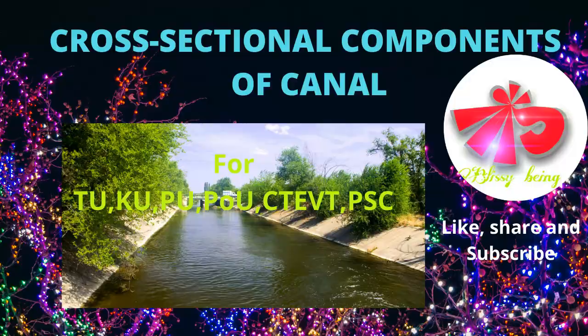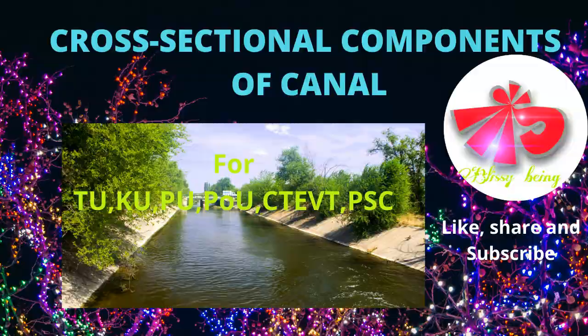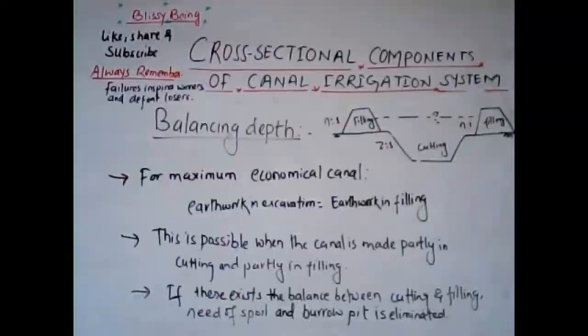This covers all the cross-sectional components of canal irrigation systems, including the side slope, berm, freeboard, bank, dowel, inspection road, spoil bank, borrow pits, counter berm, and balancing depth.